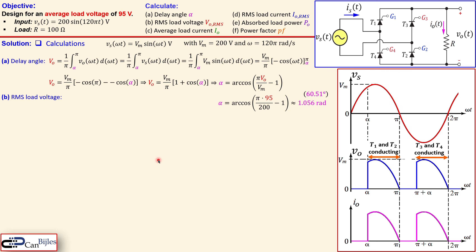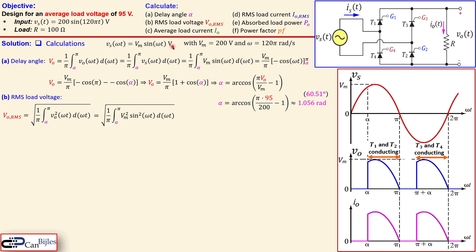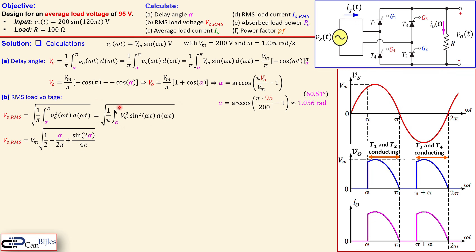Next, the RMS load voltage is given by the integral from alpha to pi of (1/pi) times the square of the output voltage expression in the omega-t domain. Since the output voltage equals the source voltage during conduction, we substitute the source voltage squared and perform the integration. The resulting expression is similar to what we derived for the half-wave rectifier integration.